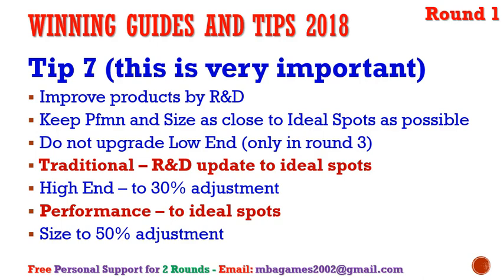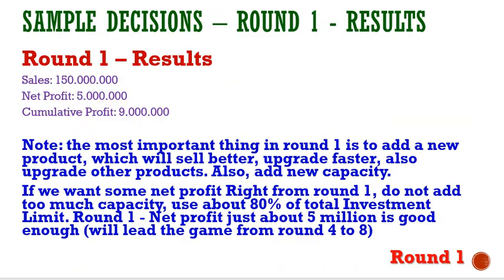Round one results: often we get sales of around $150 million and net profit of only about $5 million. Do not focus too much on net profit, but keep it positive so we can get good investment for the next round. We need only a few million net profit for rounds one, two, and three — just keep it positive and avoid the emergency loan. In the first three rounds we focus on new R&D, new product development, promotion and sales.